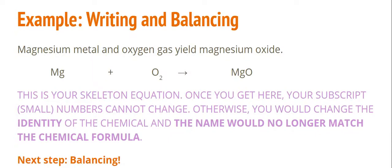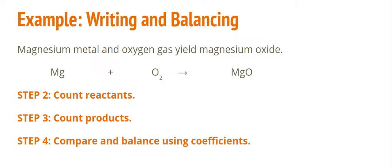Our next step is to balance. We've done the writing, now we're going to finish by balancing. So step two, we want to count our reactants. Step three, we count our products. And step four, we will compare and balance using coefficients.